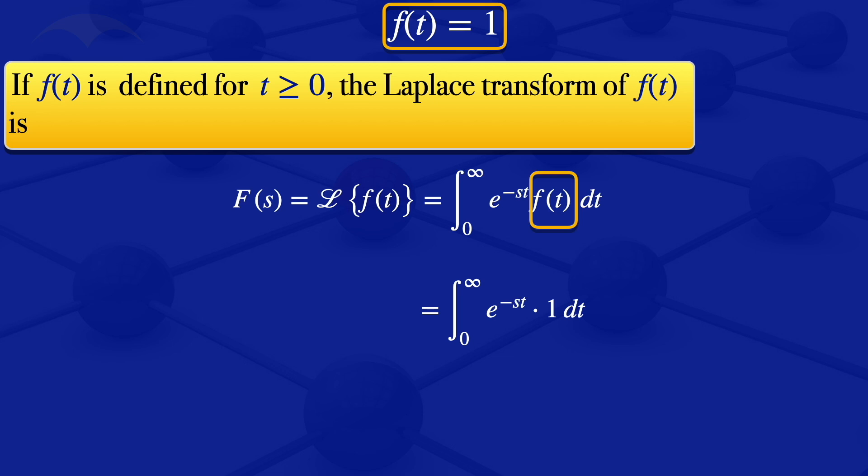e^(-st) times 1 just gives us e^(-st). And when you integrate with respect to t, we get e^(-st) divided by -s, and then we put the limits from 0 to infinity.